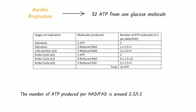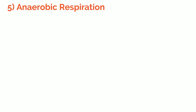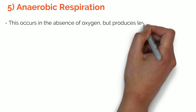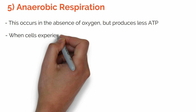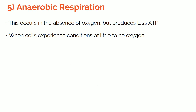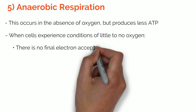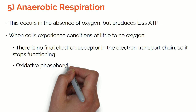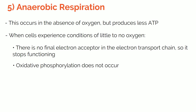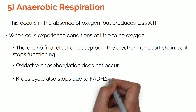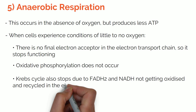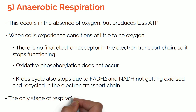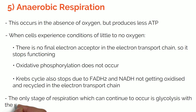In the absence of oxygen, cells can still undergo respiration but with fewer stages and hence reduced ATP production. When cells experience conditions of little to no oxygen, there is no final electron acceptor in the electron transport chain, so it stops functioning. Oxidative phosphorylation does not occur, and the Krebs cycle also stops due to FAD and NAD not getting oxidised and recycled. The only stage of respiration which can continue is glycolysis, with the products getting further reduced.